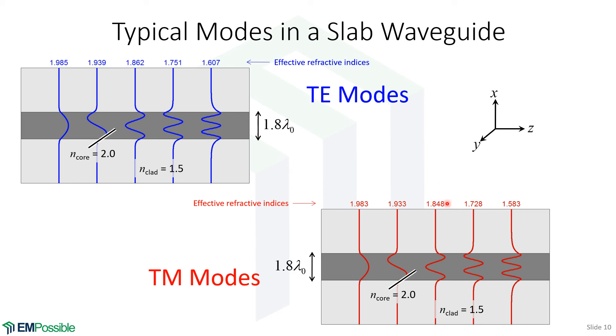But the effective refractive indices, this is telling us essentially how much phase they're accumulating as they propagate, are slightly different. For the TE modes, we are plotting the electric field. For the TM modes, we're plotting a magnetic field. If we were to plot electric fields for both, they might actually even look a little bit different.